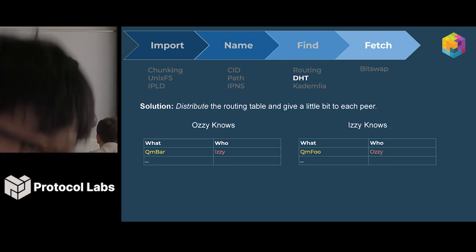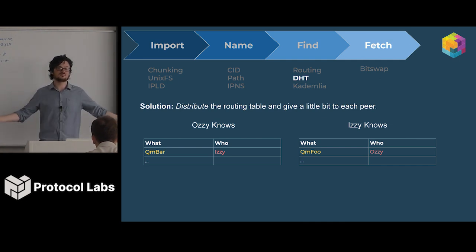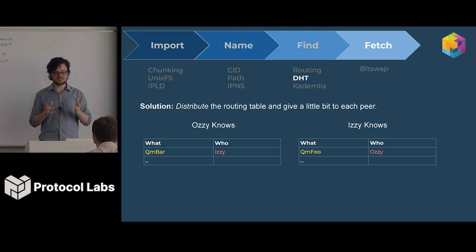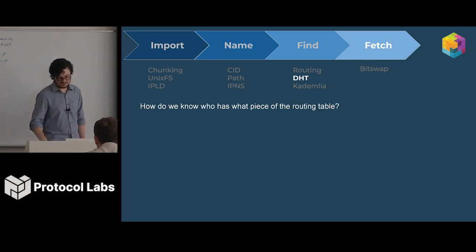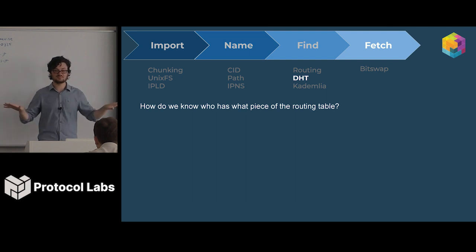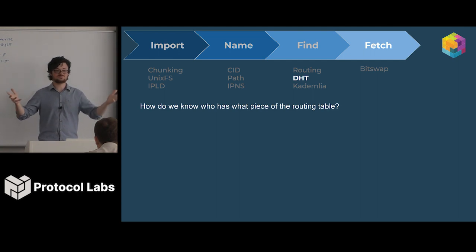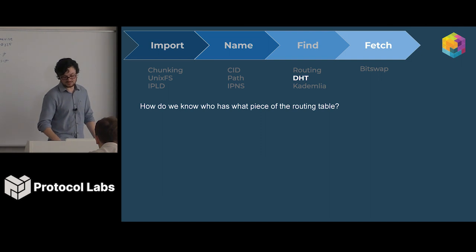To do that, we use a distributed hash table. As the name implies, you take the routing table and distribute it amongst all the peers in the network. Instead of having everyone know who has what, you have — in this case, Ozzy, one of my cats — know who has similar content, and Izzy, my other cat, know who has other pieces of content. But there's still a problem: how do you know who holds which piece of the routing table? You've broken the table into pieces and given it out, but now you don't know who to ask for the piece of the routing table to find the content.